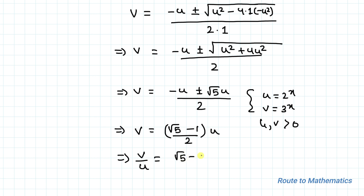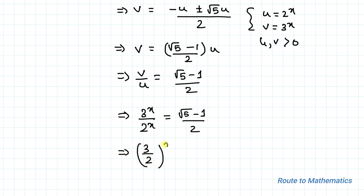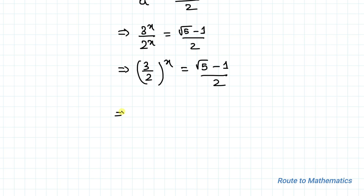This implies v/u = (√5 − 1) / 2. Now putting the values of v and u: v = 3^x and u = 2^x, so we get (3/2)^x = (√5 − 1) / 2.